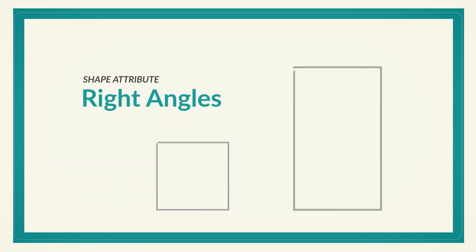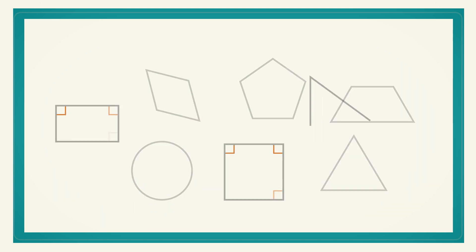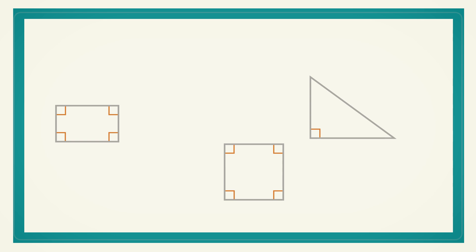Or your clue could be: find a shape with a right angle — an angle like the corner of a piece of paper — and they could find a square, rectangle, or maybe a triangle with a right angle.